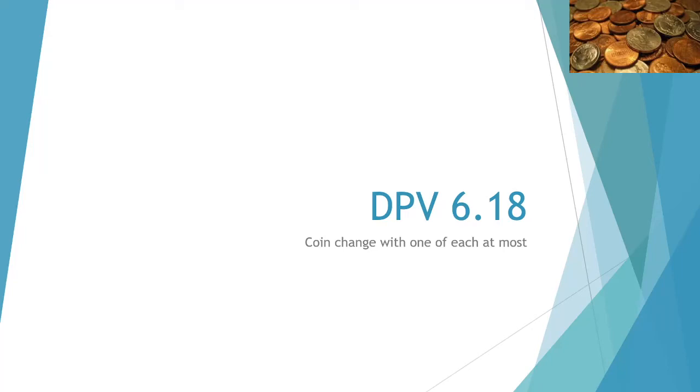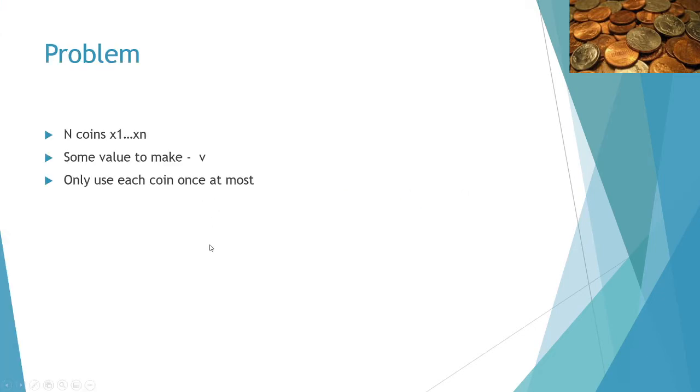Welcome guys to another session on dynamic programming solutions. Today we are dealing with problem 6.18: coin change with at most one coin of each type. So with that, let's look at the problem.